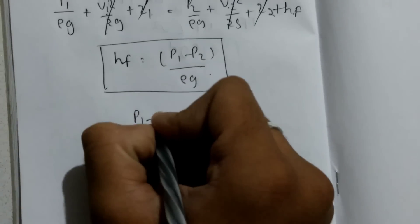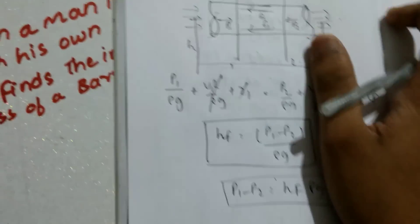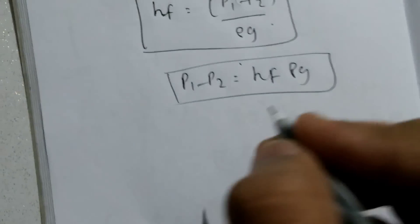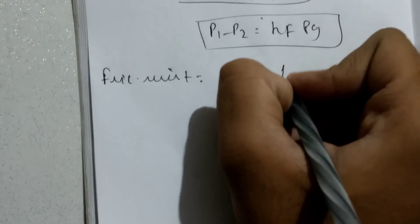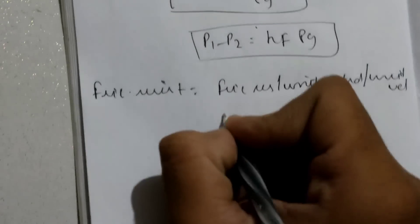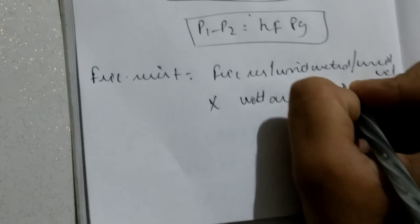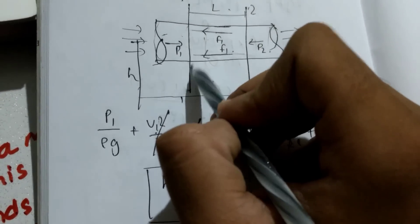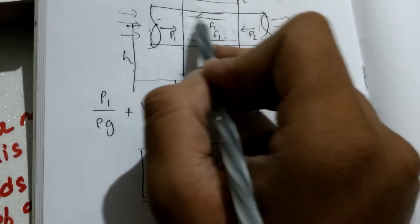We can write P1 − P2 = HF·ρg — let's keep that aside and come back to it. Now we calculate frictional resistance. Frictional resistance equals frictional resistance per unit wetted area per unit velocity, multiplied by the wetted area and velocity squared. The wetted area is the inner surface area of the pipe — that is π·D·L — because that is the area in contact with the fluid.